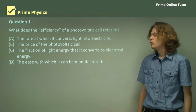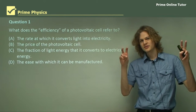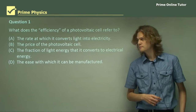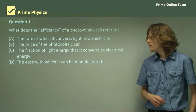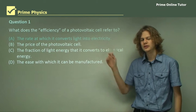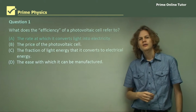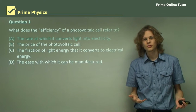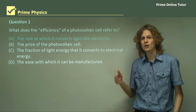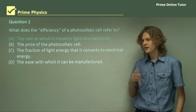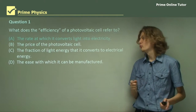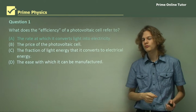Question 1: What does the efficiency of a photovoltaic cell refer to? Let's look at the options. First, A — the rate at which it converts light into electricity. Now, in some physical topics, efficiency does refer to the rate at which something happens, but in this case, that's not what the efficiency of a photovoltaic cell refers to.